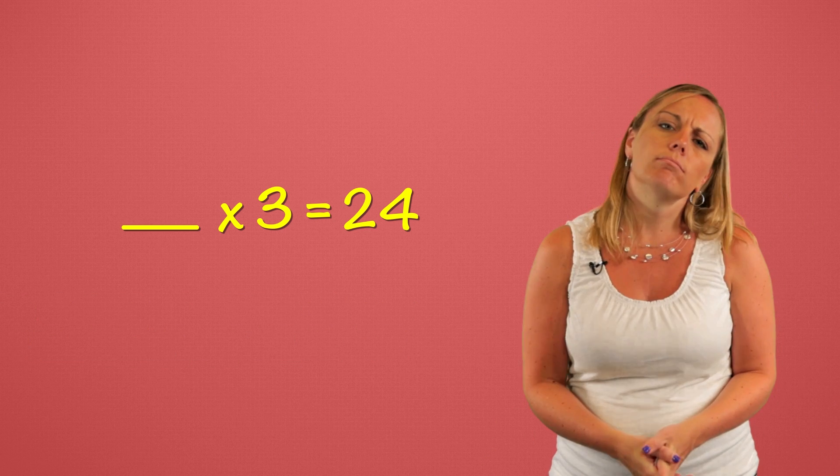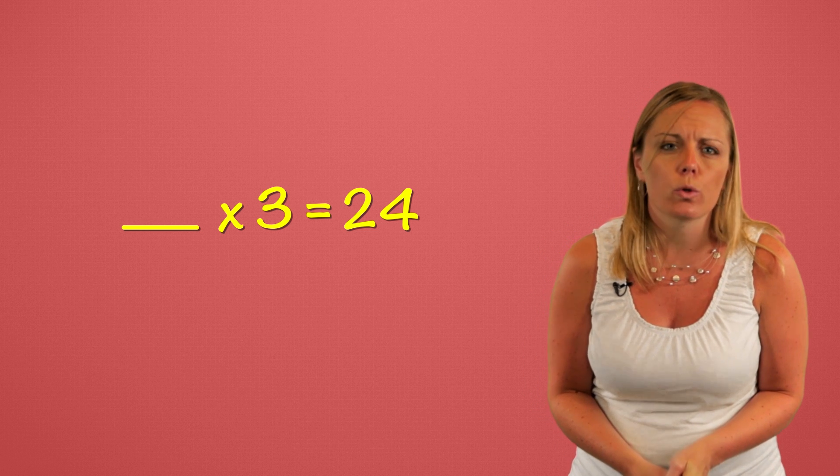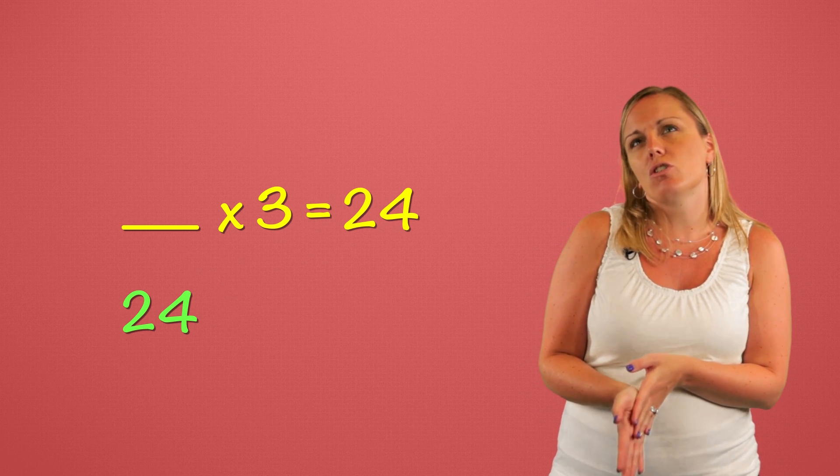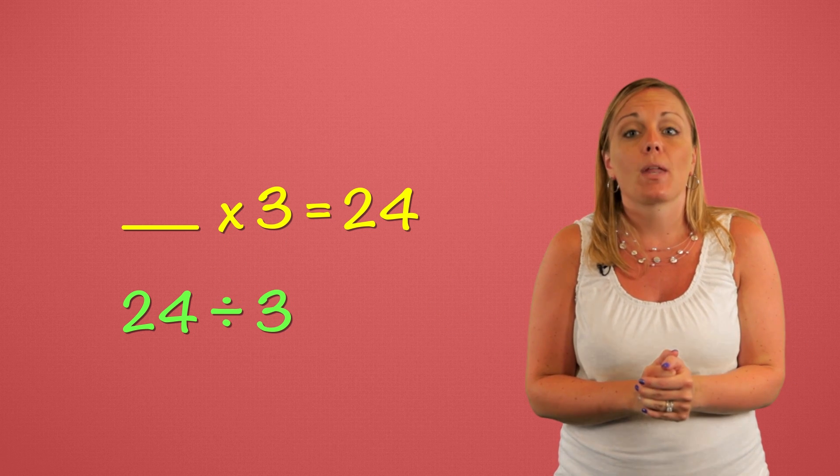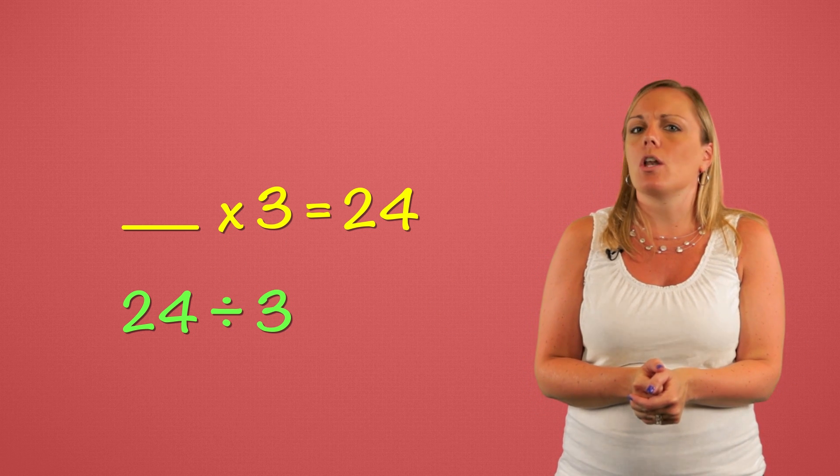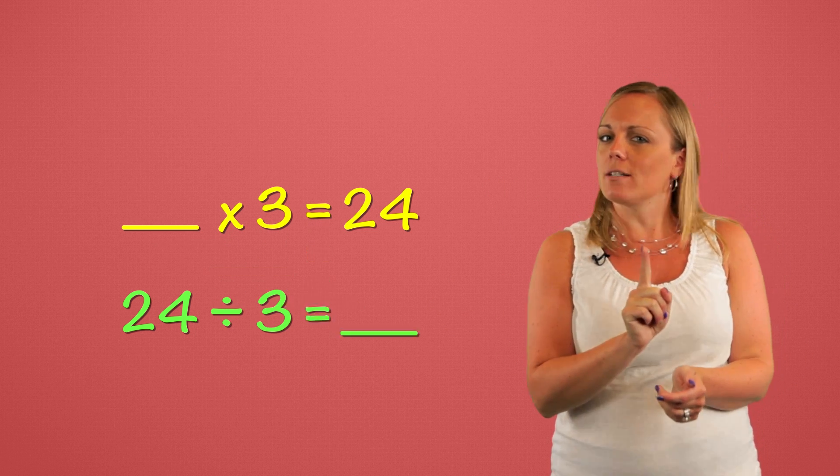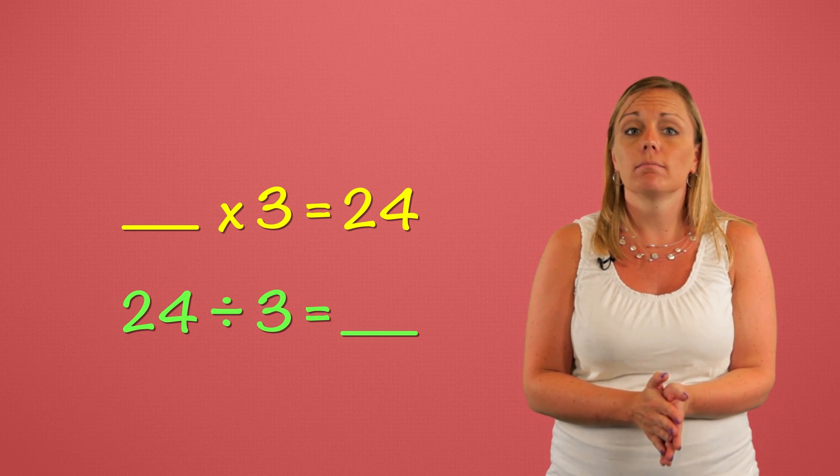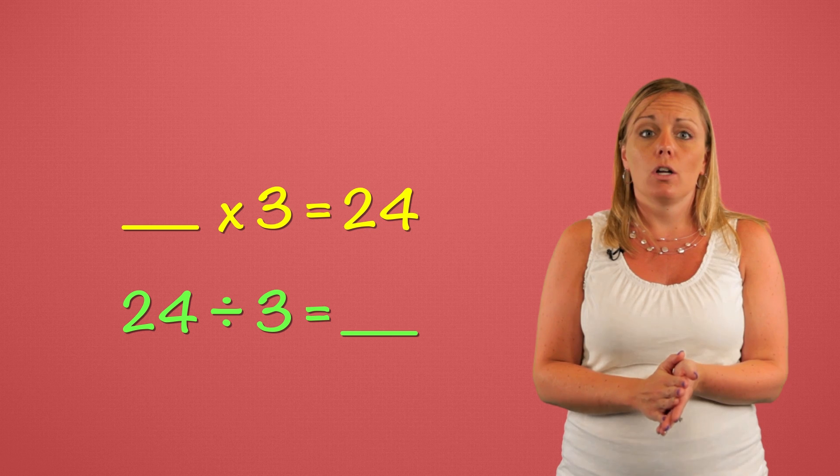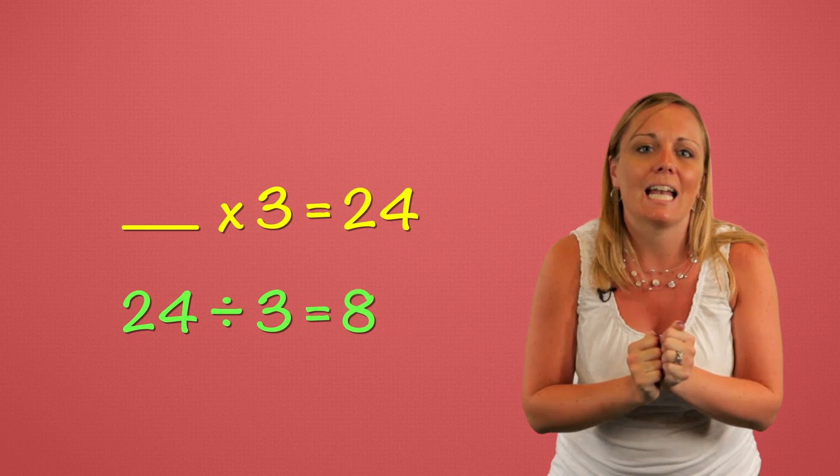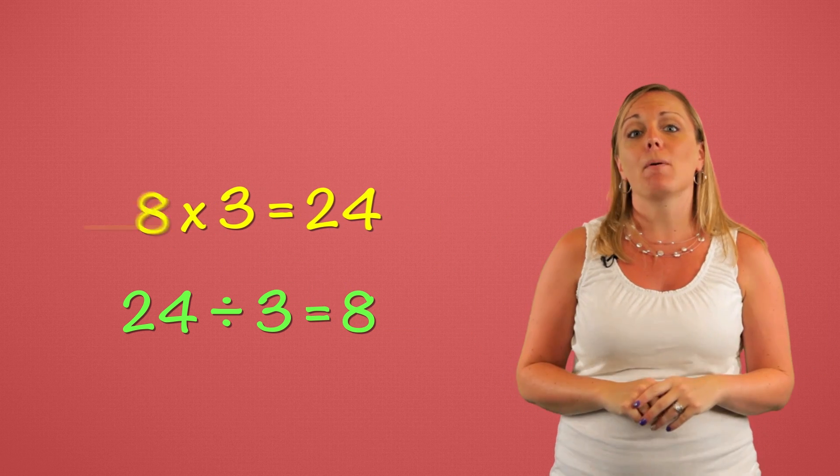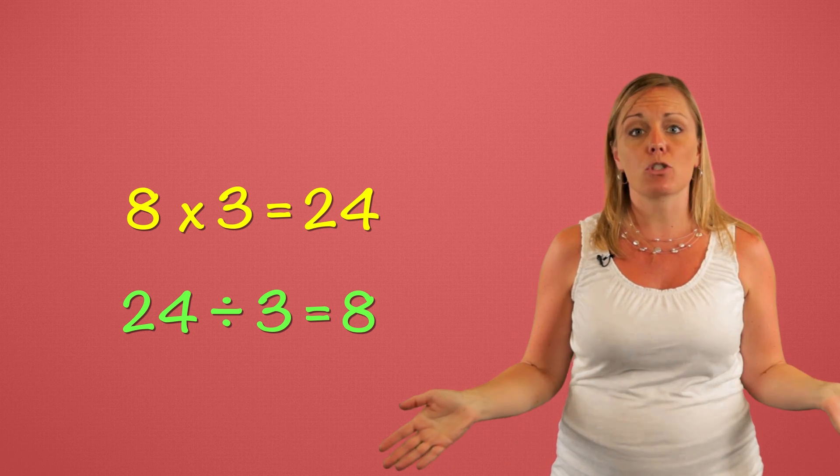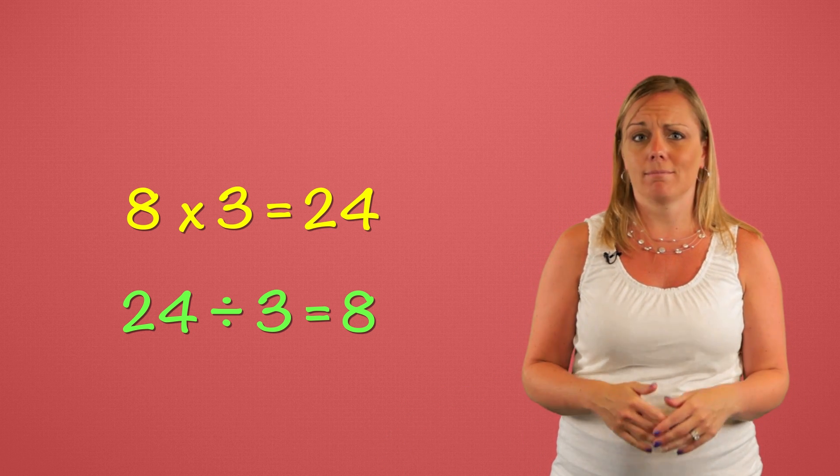Well division starts with the total. So let's put that first. Then we know one of the factors. So we'll divide by that. And now our unknown becomes the quotient. 24 divided by three equals blank. 24 divided by three equals eight. And that means eight belongs in the original multiplication sentence. Eight times three equals 24. That checks out.